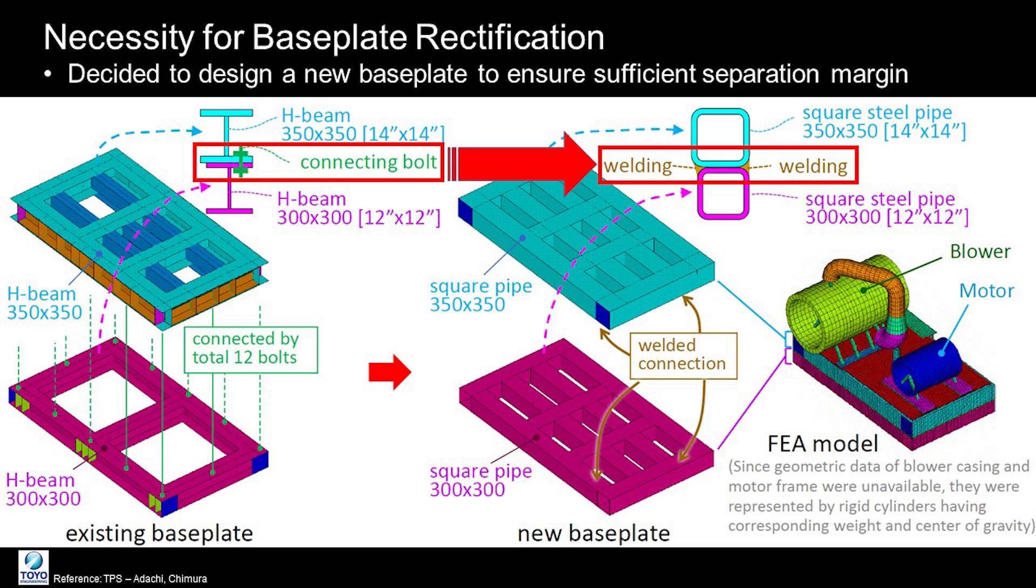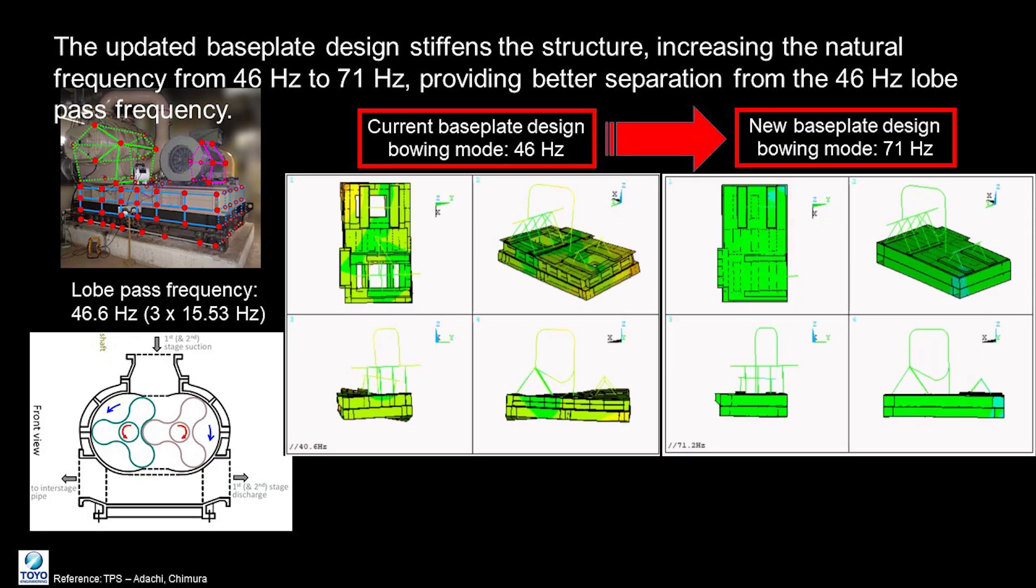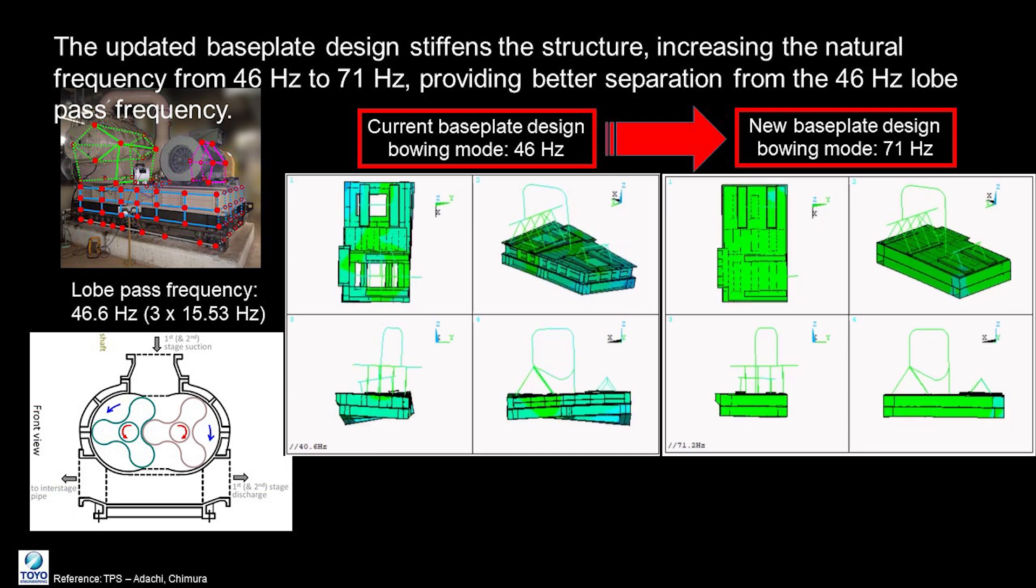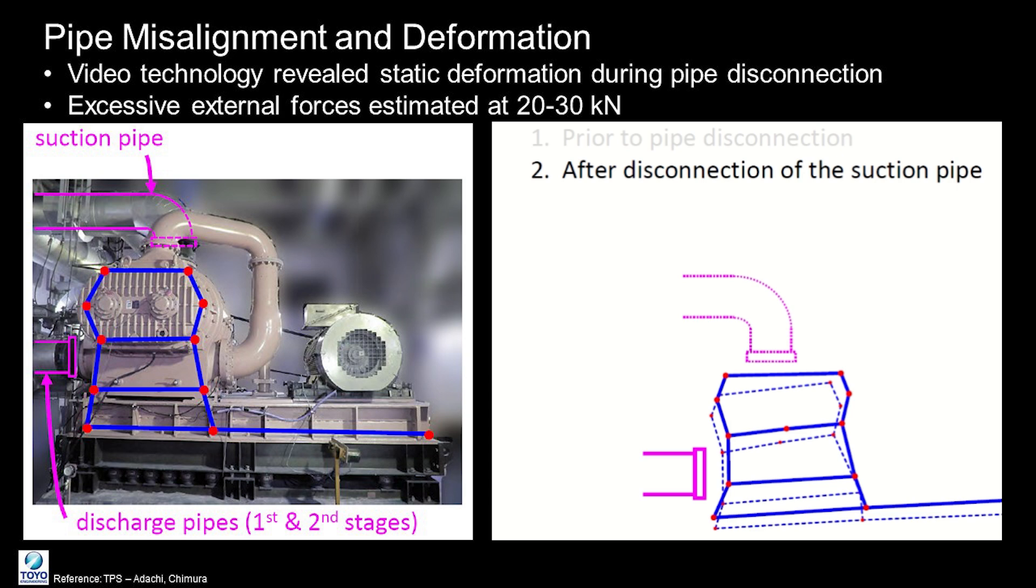It was first considered to stiffen the existing base plate, but it was determined that a completely new base plate design would be more effective. This decision was based on modal analysis and finite element analysis simulation. The updated base plate design stiffened the structure, increasing the natural frequency from 46 Hz to 71 Hz, providing better separation from the 46 Hz lobe passing frequency.